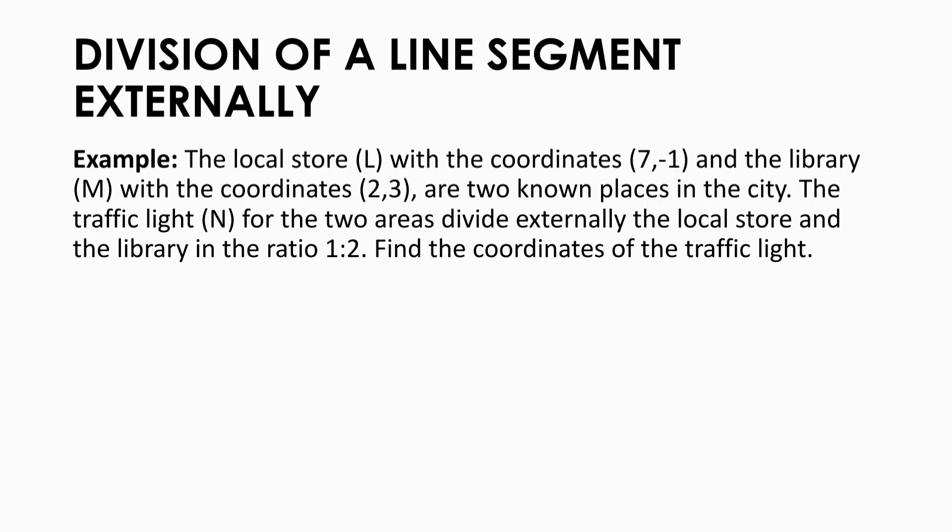If we can internally divide a line segment, we can also divide it externally. We use the same formula but substitute different parts depending on the given situation. The local store or point L has coordinates (positive 7, negative 1), and the library or point M has coordinates (positive 2, positive 3). The traffic light or point N divides externally the local store and the library in the ratio 1 to 2. Find the coordinates of the traffic light.